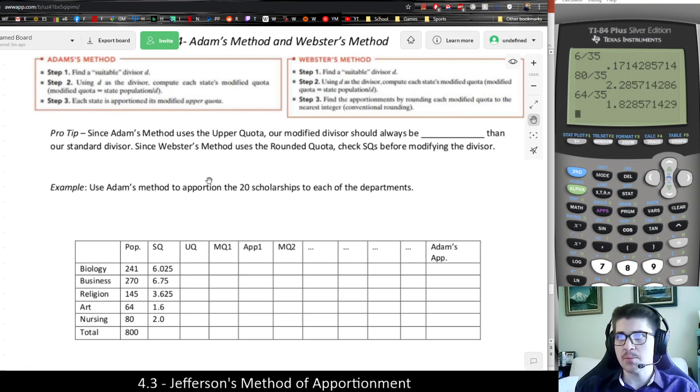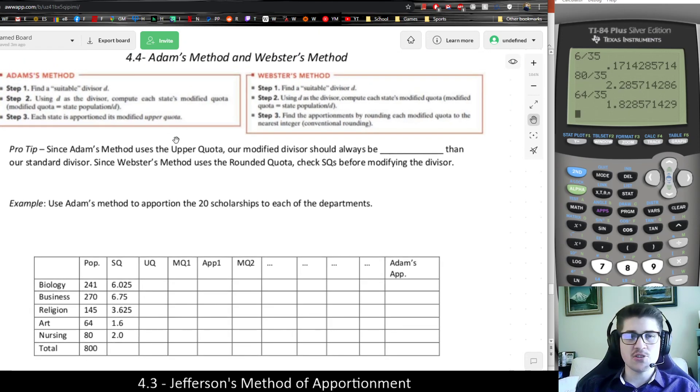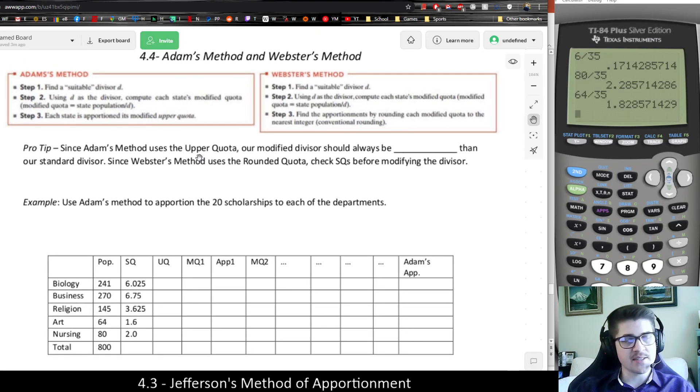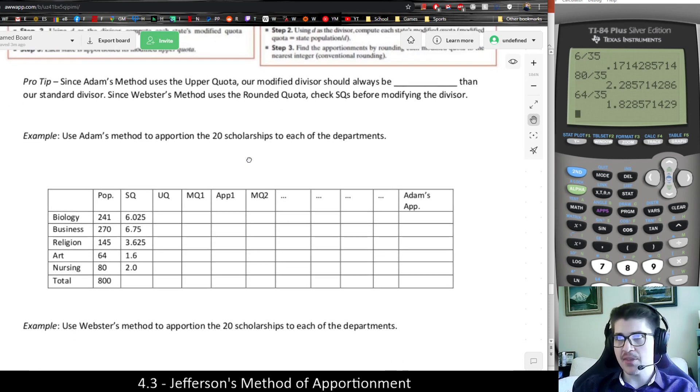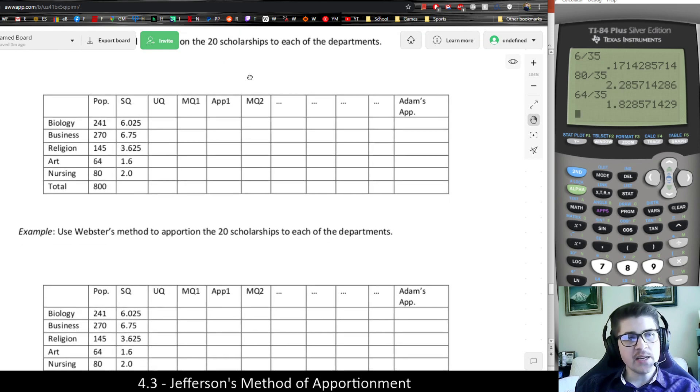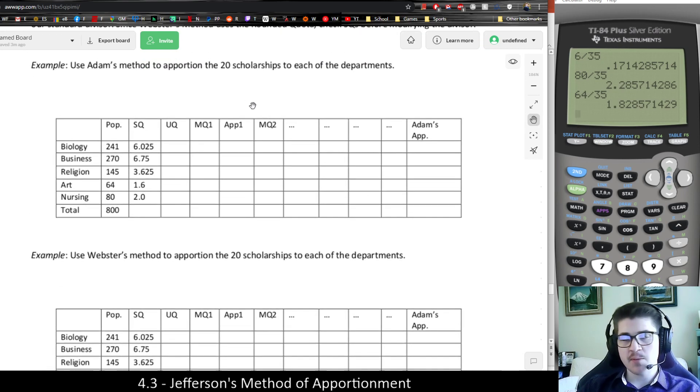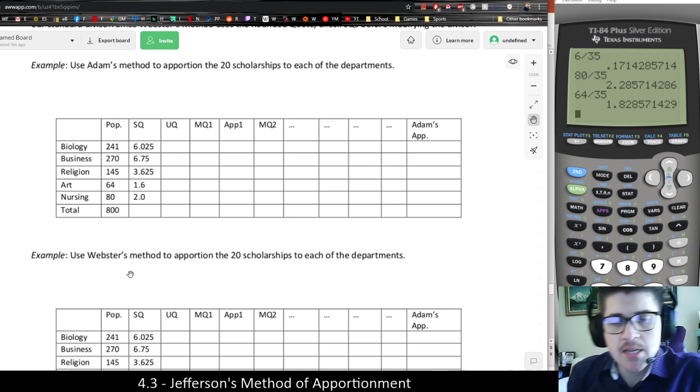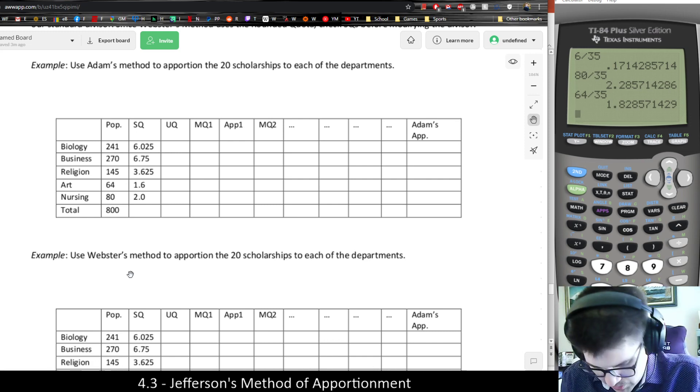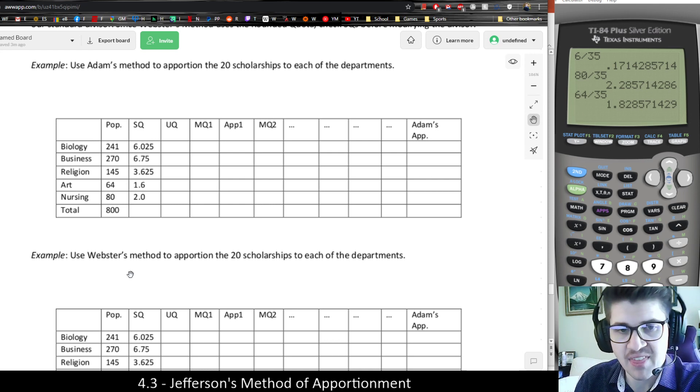Let's do an example of using these methods next. Just to sort of recap, the only difference is when we're applying Adam's method, we're going to always round up, and when applying Webster's, we're going to be rounding conventionally. But otherwise, we're still doing the whole guess and check divisor methodology.